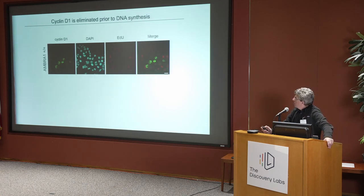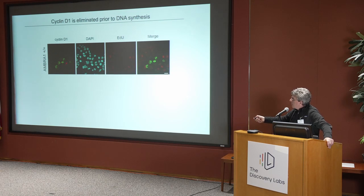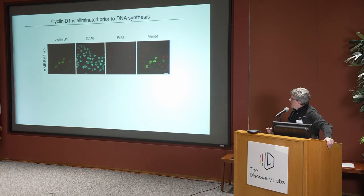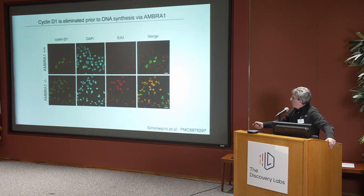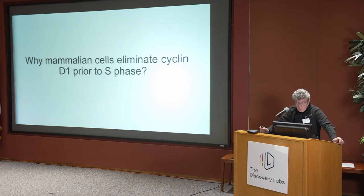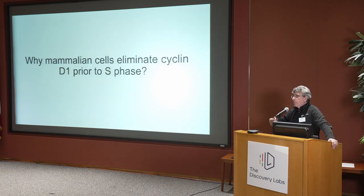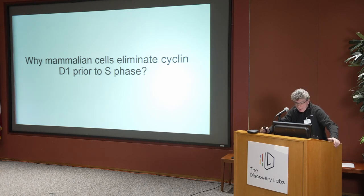In the course of this work, we had an observation: cyclin D1 is present in the nucleus of some cells, and these cells happen to be EDU-negative. So either cells incorporate EDU — meaning they replicate their DNA — or they express cyclin D1, but never both. Cyclin D1 is eliminated prior to DNA synthesis. In parental cells, if you remove AMBRA1, cyclin D1 will be present in all cells. The question is: why do mammalian cells need to eliminate cyclin D1 before S phase?